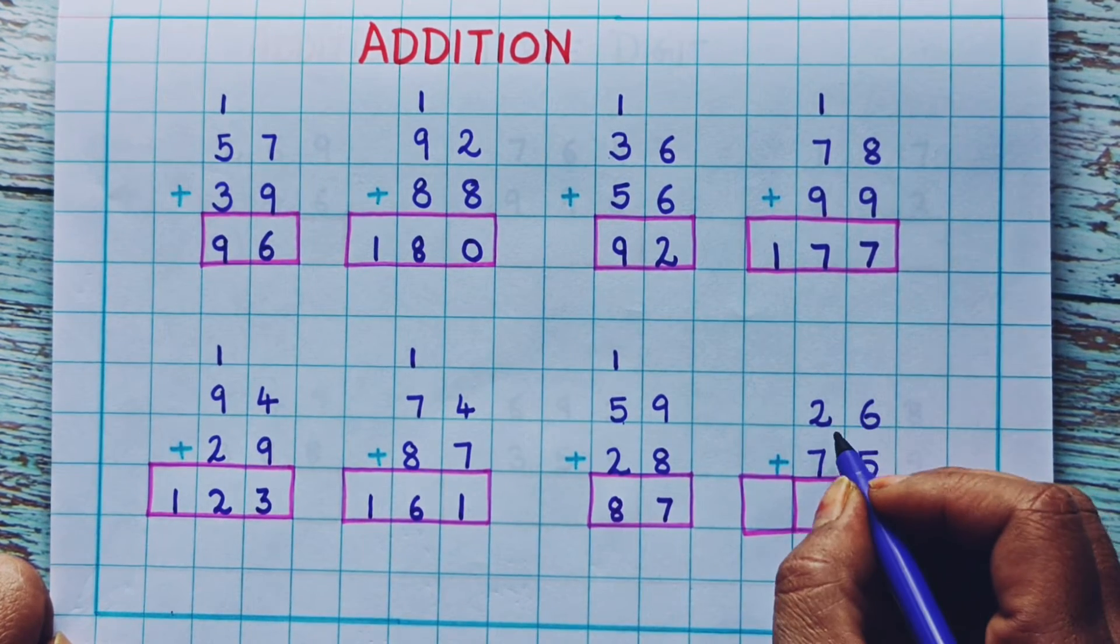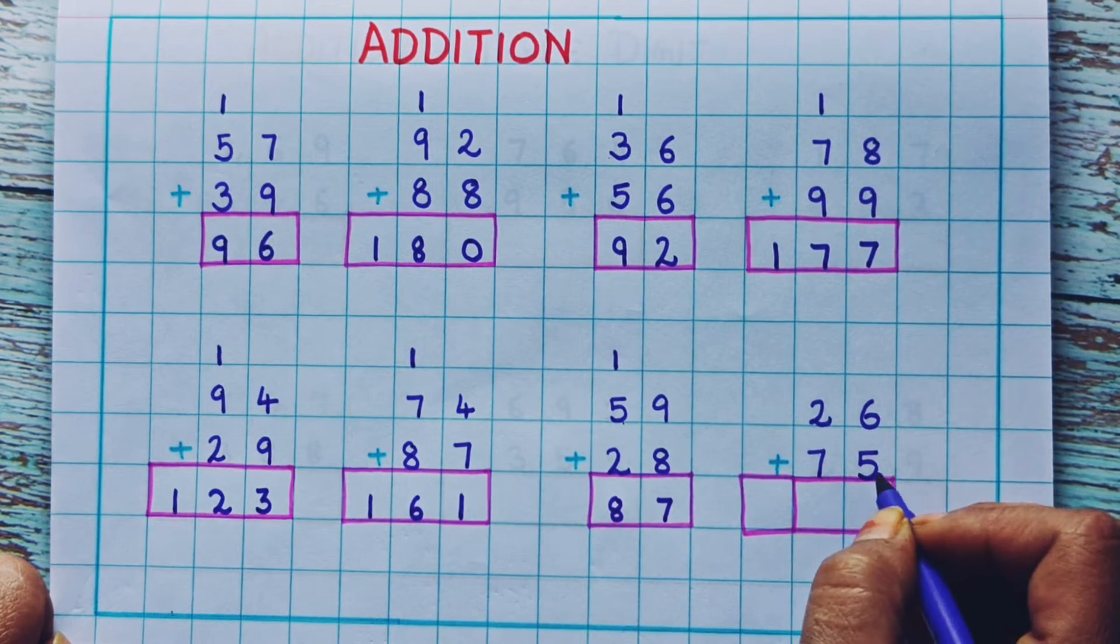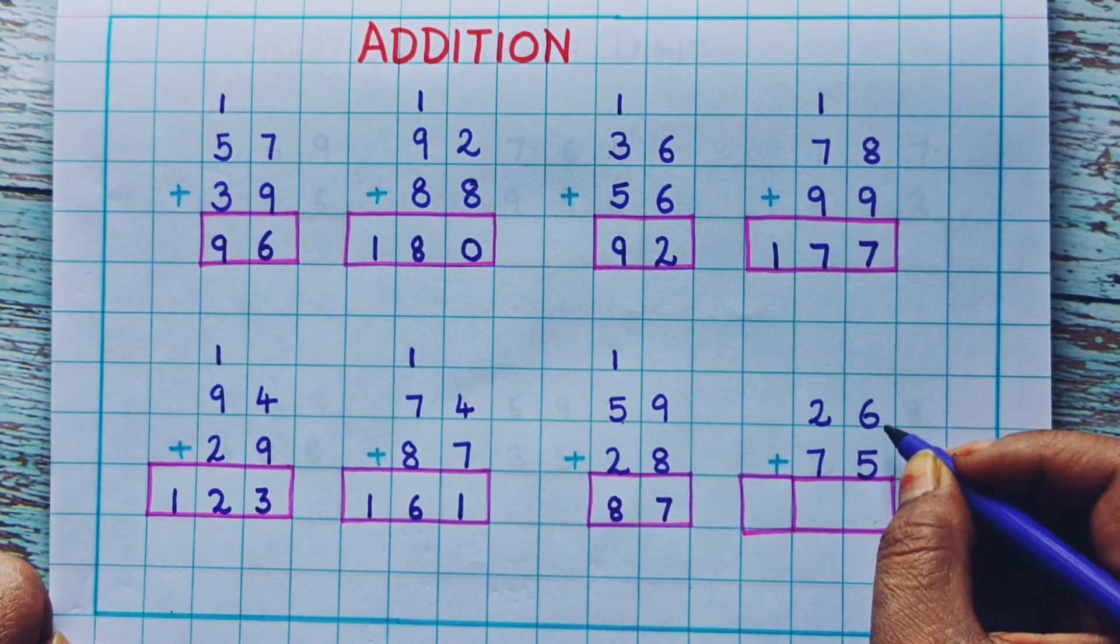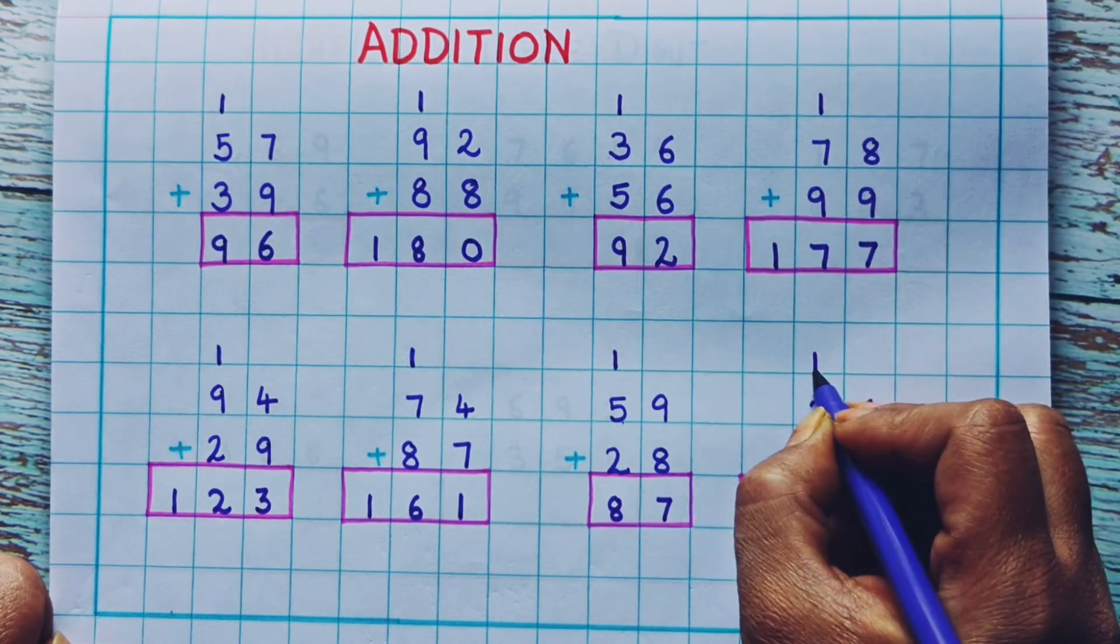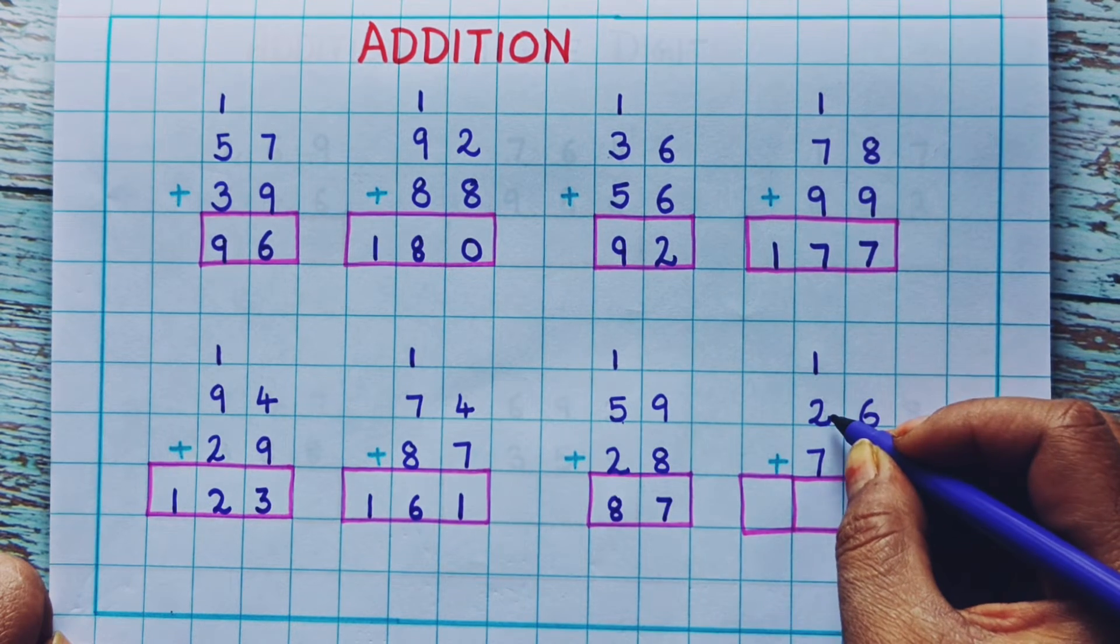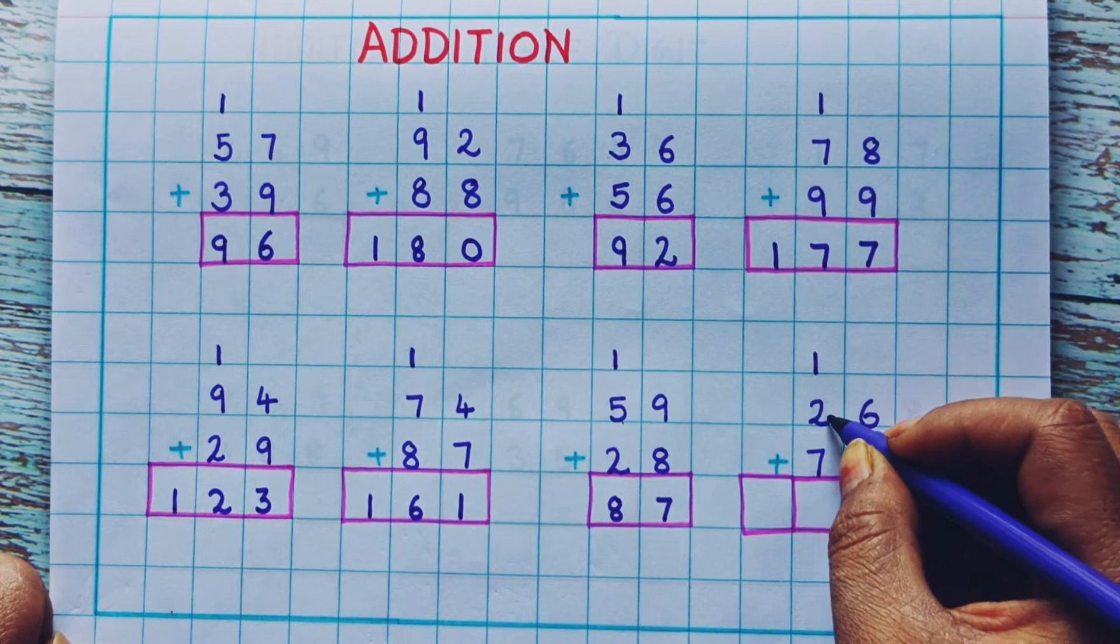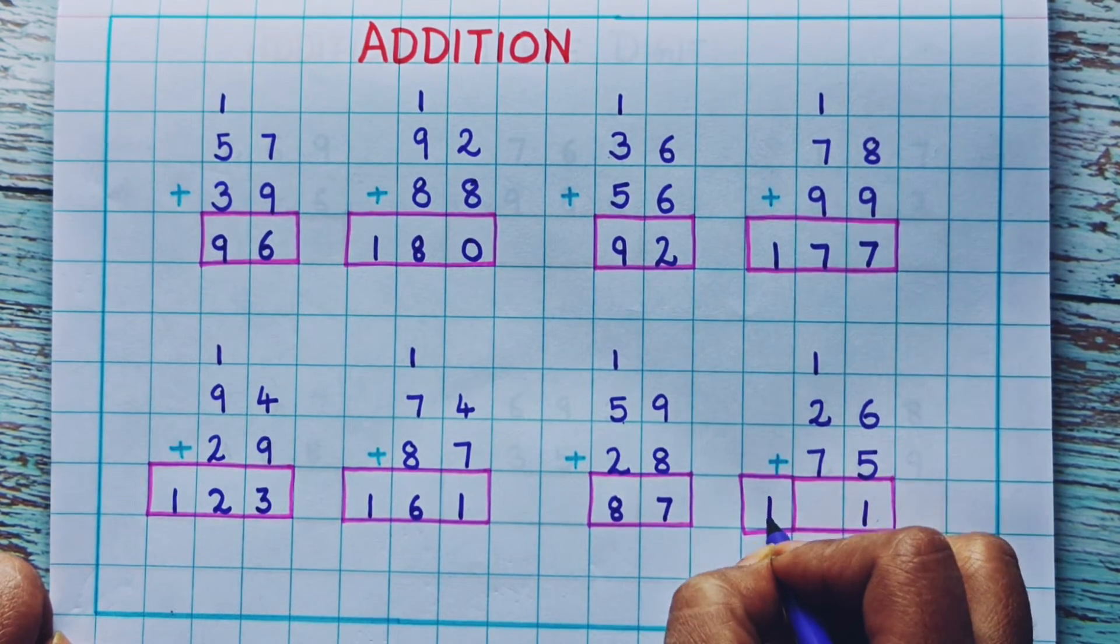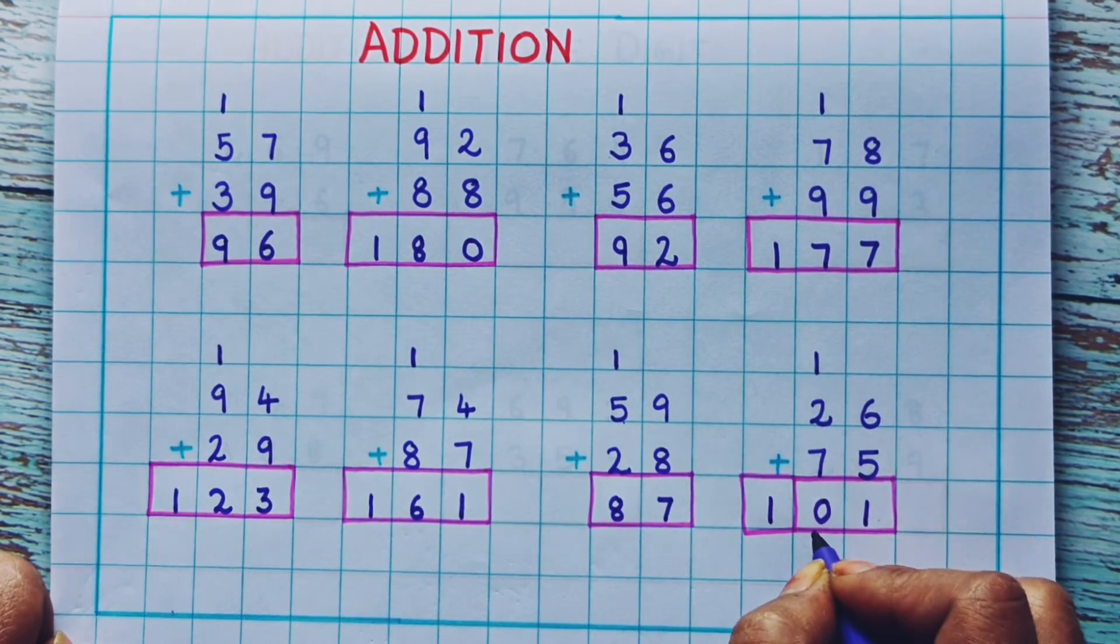Now the next one. 26 plus 75. 6 plus 5 is how much? 11. So here I will write 1 and 1. Now 7 plus 2 is 7, 8, 9. And plus 1 is 10. So the answer is 101.